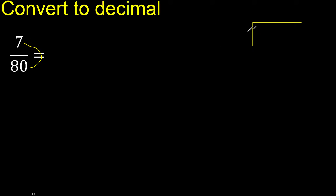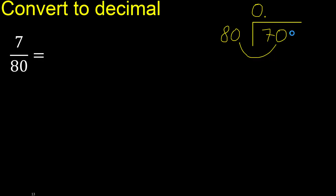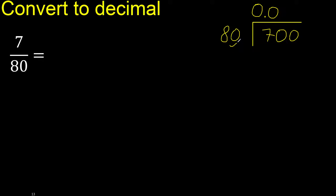7 divided by 80. Since 7 is less than 80, complete with 0 — giving 0 point, then 70. 70 is still less, so complete again with 0 to get 700. 700 is not less than 80, so find which number to multiply 80 by to get nearest to 700 without going greater.